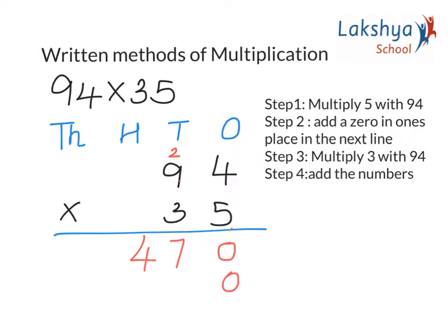Step 3: Multiply 3 with 94. First, always remember to multiply the ones place first. So 3 × 4 gives me 12. I write 2 in the tens place and 1 also I need to write over here in tens place because it has to be added to the multiple of 3 × 9.